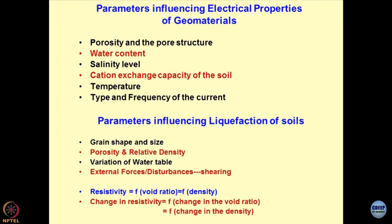Because we are geotechnical engineers, it is useful to draw a balance between the parameters which influence the liquefaction potential of soils and how electrical properties can be utilized to map them. Grain shape and size can easily be mapped using electrical properties, and we know liquefaction is associated with coarse grain materials which are regular or spherical in shape. Studies on grain shape and size effect using impedance have been conducted successfully and are still ongoing. Porosities and relative densities, which are related to liquefaction potential, can be easily captured by electrical properties, and variation in water table — which is saturation as a function of depth including the capillary zone — can also be mapped. External forces like shearing effects are also being studied — some of my PhD scholars are working on whether we can capture the shearing response using electrical signatures of the material.